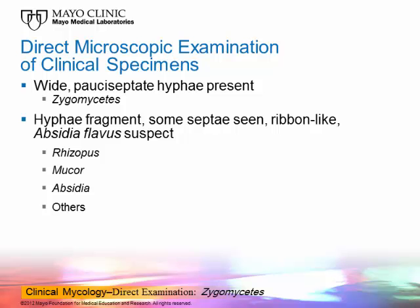In direct microscopic examination, pauci-septate hyphae often fragment into smaller pieces in a biopsy. We call them pauci-septate because there are just a few septations present. On a dressing where the organism can grow unrestricted, they look ribbon-like. Importantly, Aspergillus flavus — which causes disease in leukemic patients — can also have pauci-septate enlarged hyphae. The distinction is the frequency of septations: if there are more septations than expected for zygomycetes, it's probably Aspergillus flavus.